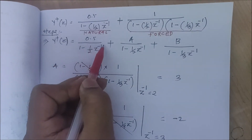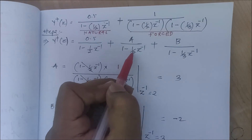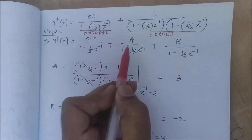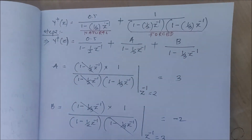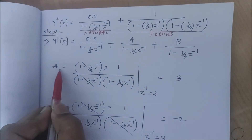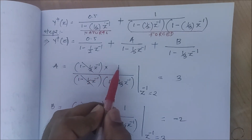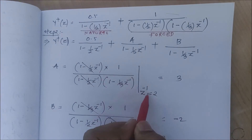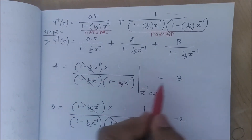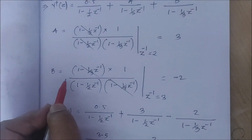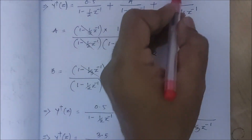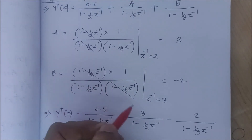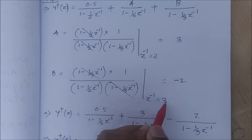Now Y(z) = 0.5/(1-(1/2)z^(-1)) + A/(1-(1/2)z^(-1)) + B/(1-(1/3)z^(-1)), applying partial fractions to the forced response term. Solving for A: setting z^(-1) = 2, A = 3. Solving for B: setting z^(-1) = 3, B = -2.